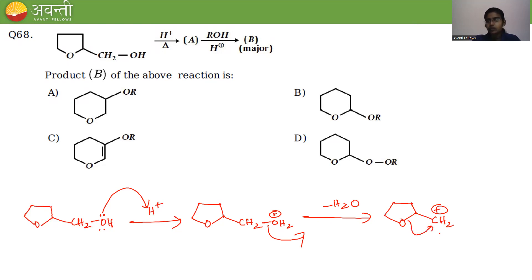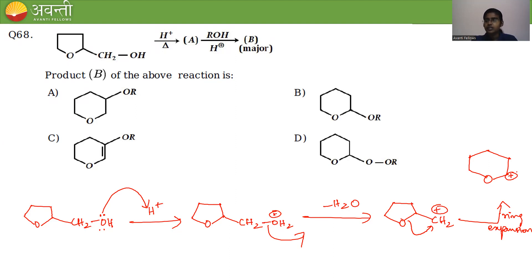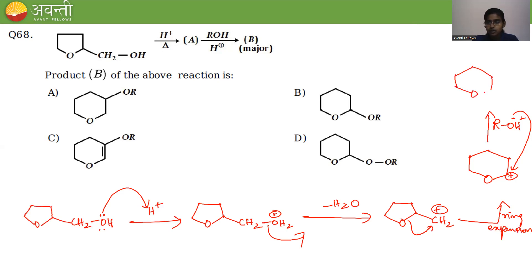The ring expands to a six-membered ring with a carbocation. Compound A is then treated with ROH (alcohol). RO⁻ attacks the carbocation (electrophile) to give the major product B, which is given in option B.